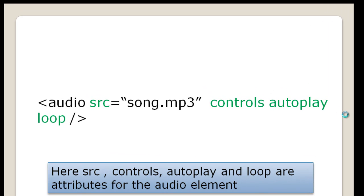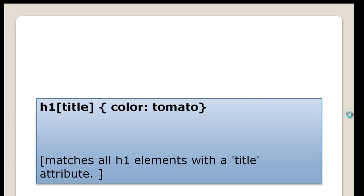Most of you are aware of the audio and video tags in HTML5. For the audio element, src (source), controls, autoplay, and loop are all attributes. Controls, autoplay, and loop don't exactly have a value, but that doesn't mean they are not attributes - they stand alone without any values. The CSS rule shown means every h1 element that has an attribute called title should get the color tomato.